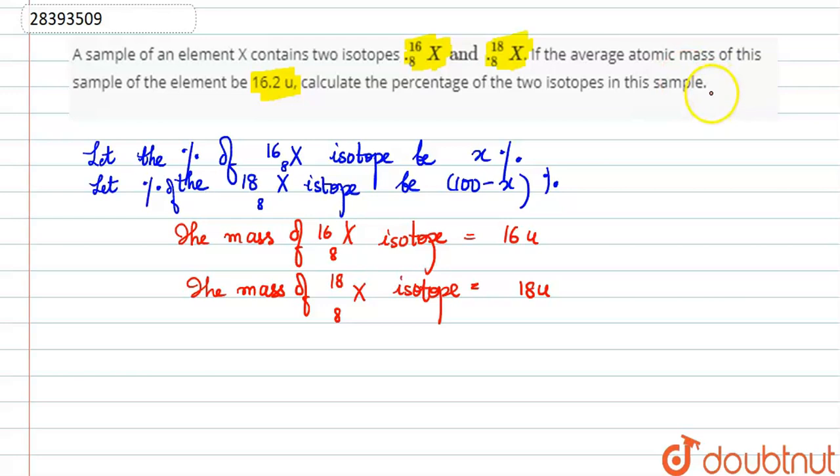Now I've been given the average atomic mass. So what's the formula for calculating average atomic mass? Multiply this percentage by its mass, and that percentage by its mass, and add both. So x upon 100 times 16, percentage gives us 100, plus 100 minus x upon 100 times 18.